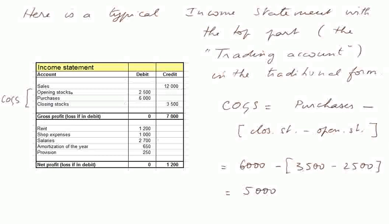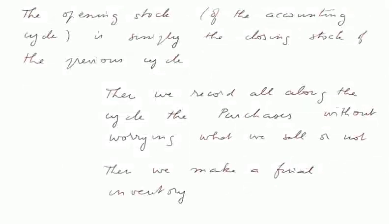Here we talk about the opening stock. The opening stock of the accounting cycle is simply the closing stock of the previous cycle. So in this example, we are no longer in the first cycle of the life of the firm, but in another one in a subsequent year.